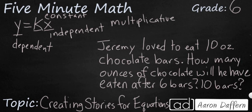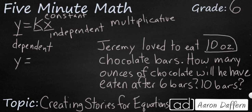Here's a simple problem that matches this type of equation: Jeremy loved to eat ten-ounce chocolate bars. How many ounces of chocolate will he have eaten after six bars or after ten bars? The answer is going to be our y — our dependent variable — because that number changes based on our independent variable and our constant. Our constant is ten ounces, because that is the weight of each chocolate bar; it doesn't change. That's our constant, and it's going to be multiplied by our independent variable. The variable that starts things off is how many bars he eats — and we have two values here: six and ten.